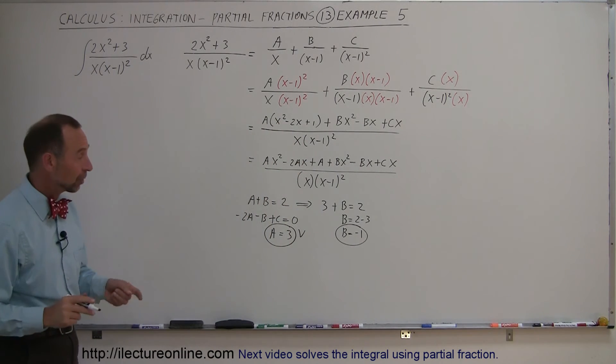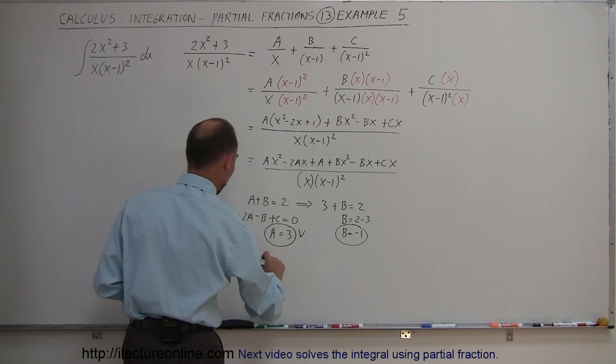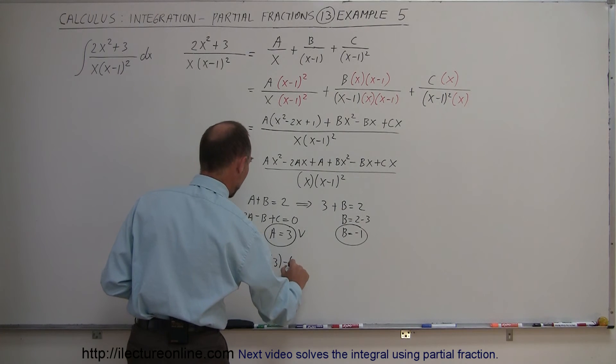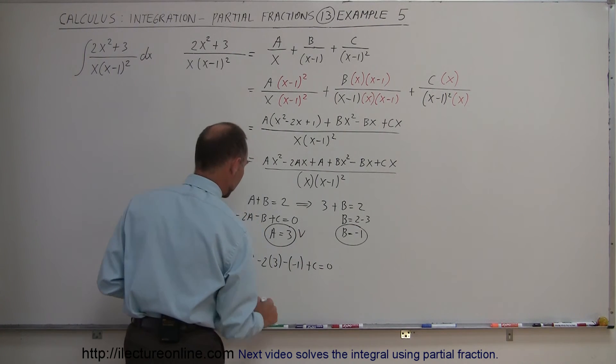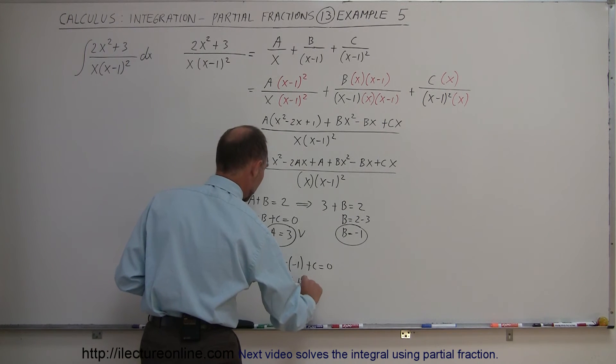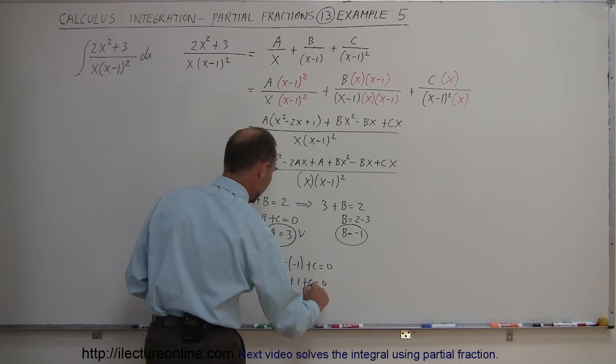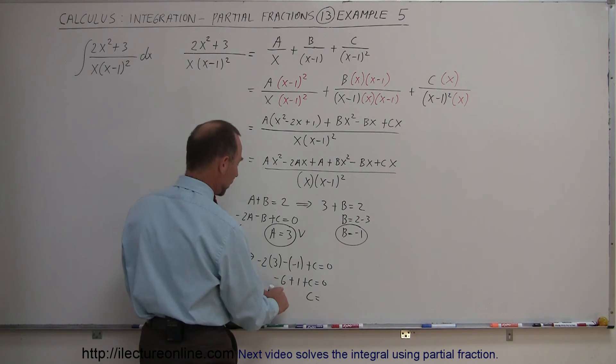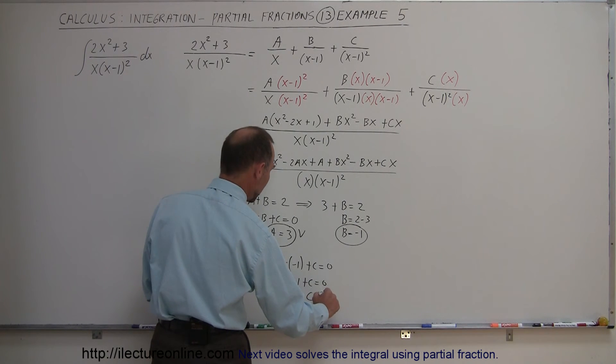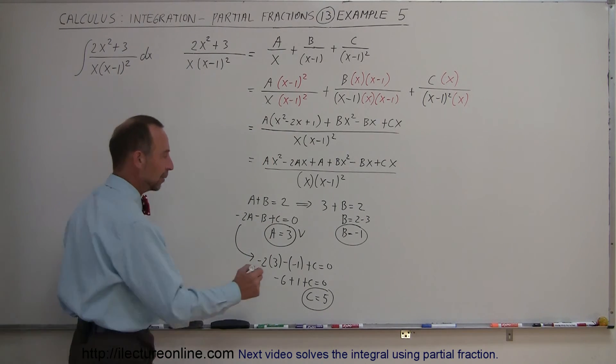Alright and finally we can solve for C, plug in what we know for A and B in here so here we have minus 2 times A which is 3 minus B which is a minus 1 plus C equals 0. So that's minus 6 plus 1 plus C equals 0 or C is equal to, when I bring the minus 6 over that becomes plus 6 then 1 becomes a minus 1 that would be C equals 5. So we have A, B, and C are now identified.